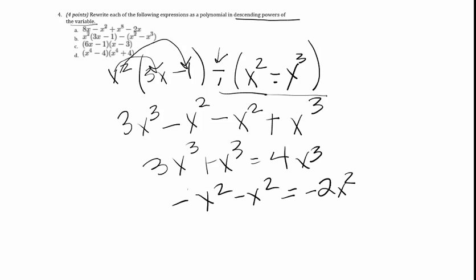So my final answer actually becomes 4x cubed minus 2x squared. That's in order of descending powers of the variable because 3 is bigger than 2, so we put the 3 first.